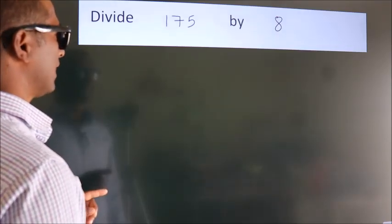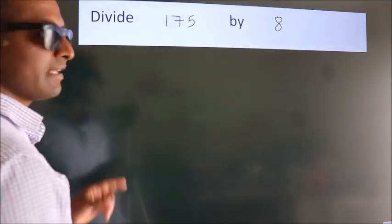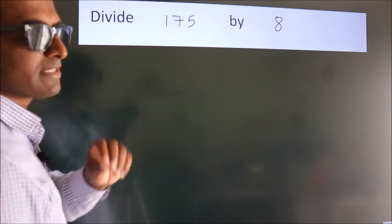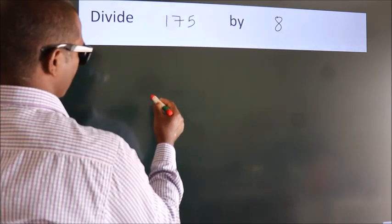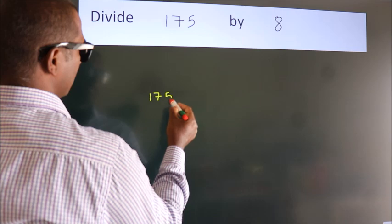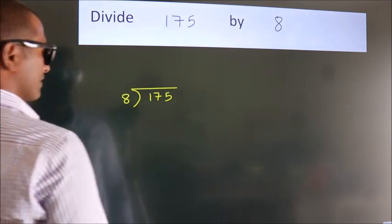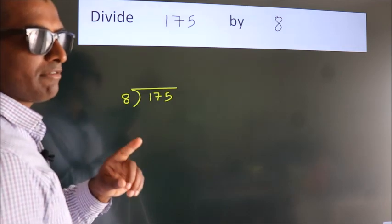Divide 175 by 8. To do this division, we should frame it in this way. 175 here, 8 here. This is your step 1.